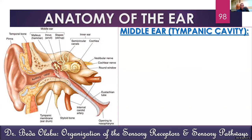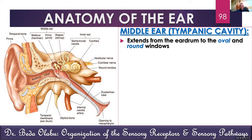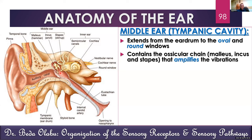Now we talk about the middle ear. The other name given to the middle ear is the tympanic cavity. The tympanic cavity extends from the eardrum laterally to two openings on its medial wall, which we call the oval window and the round window. The oval and round windows separate the middle ear from the inner ear, while the tympanic membrane separates the middle ear from the outer ear. The tympanic cavity contains small bones in the form of a chain — the ossicular chain — consisting of the malleus, incus, and stapes.